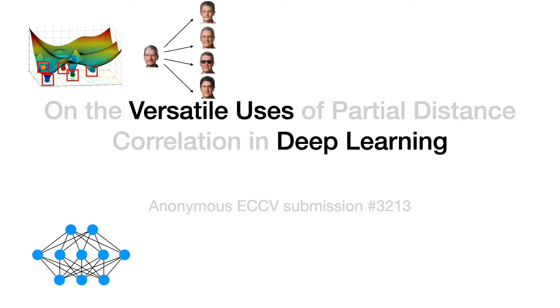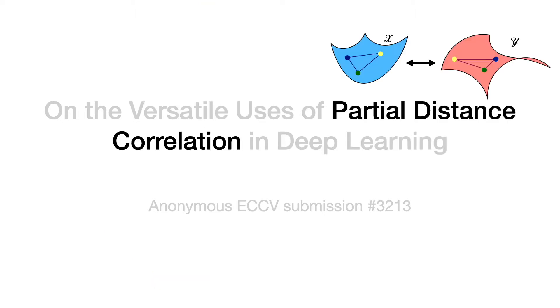We consider a basket of different problem settings common in vision, from learning disentangled representation to understanding what one network learns that one or more other networks do not. We show that a single concept can offer a strategy to study all these problems via a unified lens. So what is this concept? We show how the ideas of distance correlation and partial distance correlation, not very well studied outside statistics, offer many useful features that have gone unnoticed in our community.